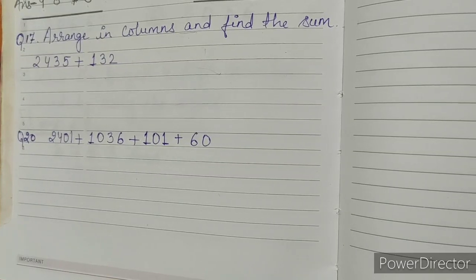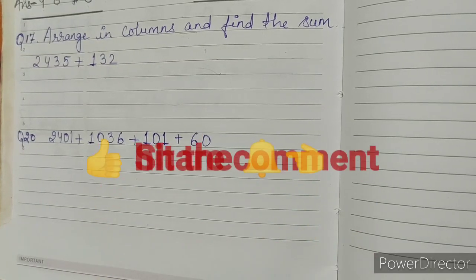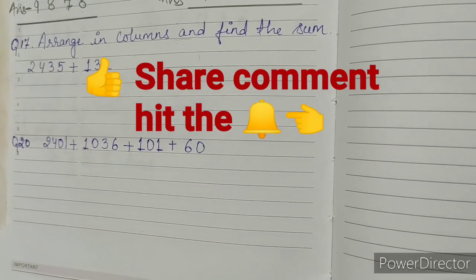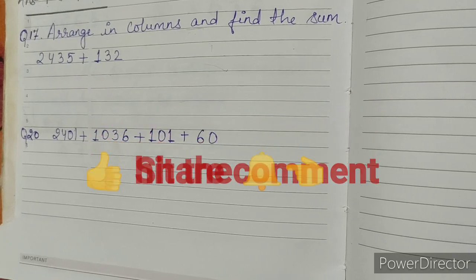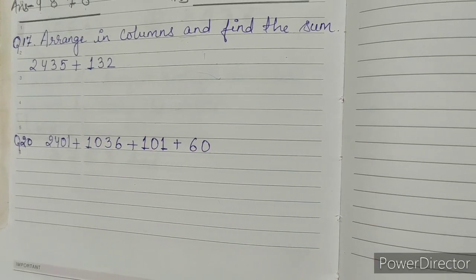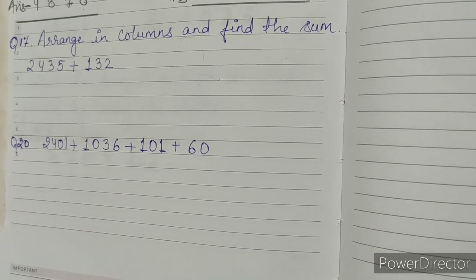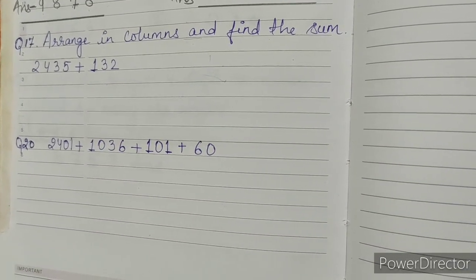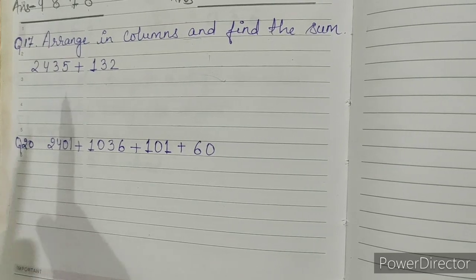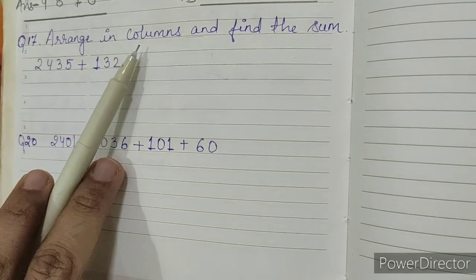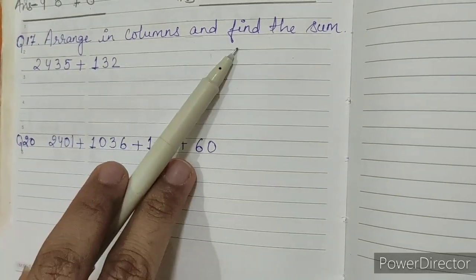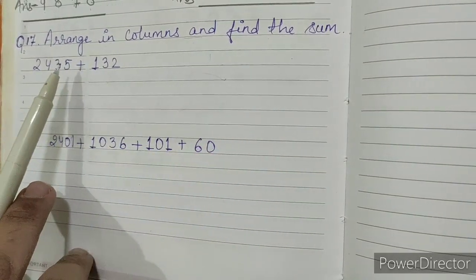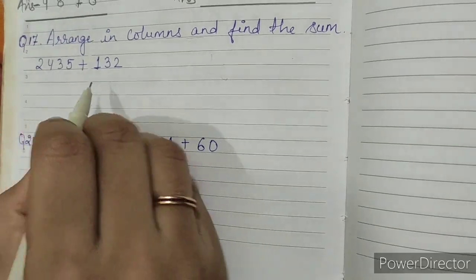Hello students, welcome to our new video session. Today we are starting with Chapter 4, Edition Exercise 6, Question Number 17: arrange in columns and find the sum. In this question we have to first of all arrange the numbers.